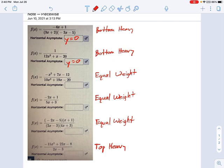Now, a top-heavy one is also very easy. There is no horizontal asymptote. It's just a DNE. That's very quick to solve.